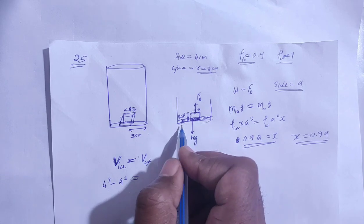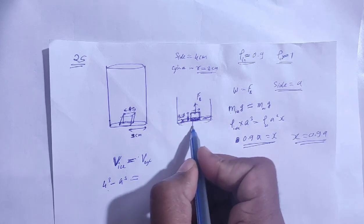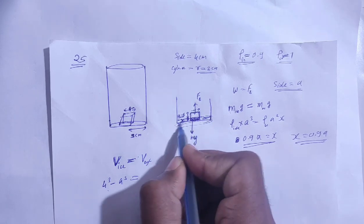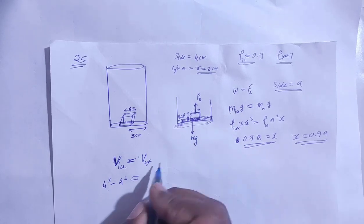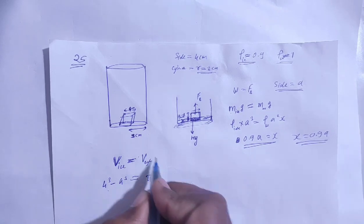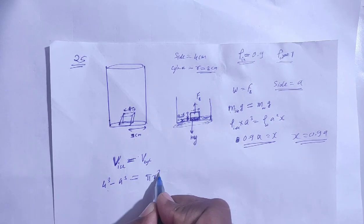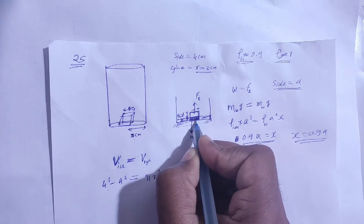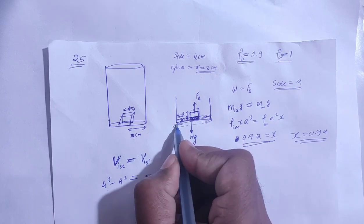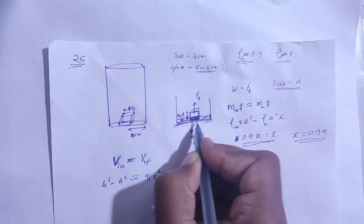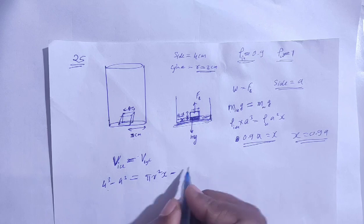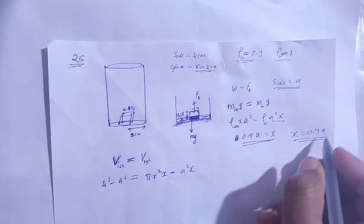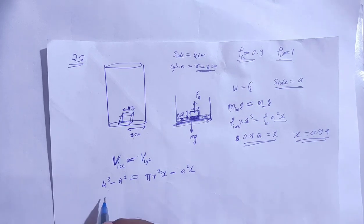Area into height. Pi r squared into x, but this is not just water. Here is water displaced. This water will be removed. This water will be a squared x. This equation, we'll put x value and r value.